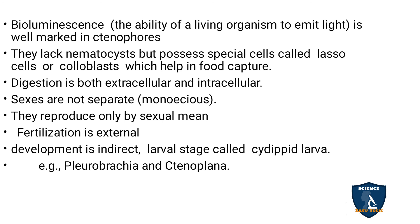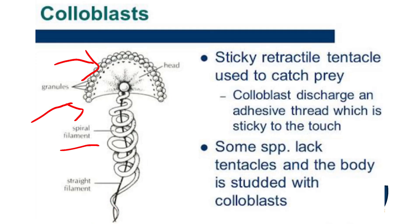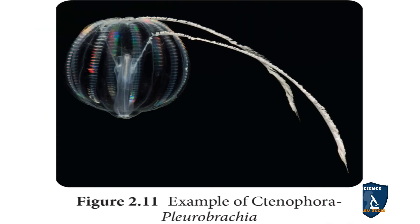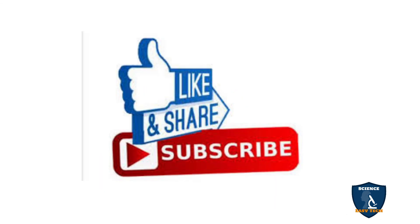Examples of Ctenophora are Pleurobrachia and Ctenoplana. You can see the picture of Pleurobrachia, which also shows bioluminescence — you can see the light emitting from this organism. If you have any doubts, post them in the comment box, give a thumbs up, share, and subscribe to the Science Easy Tech channel.